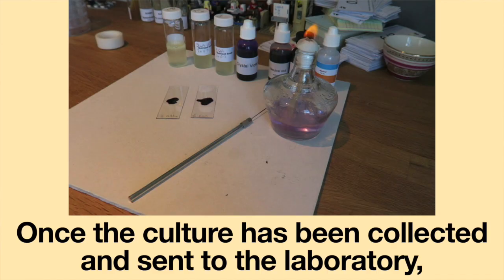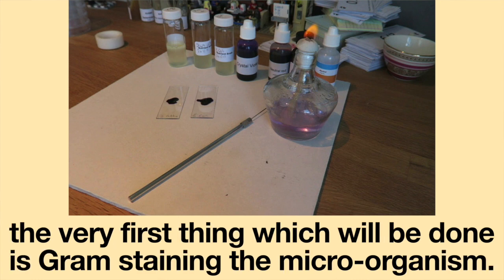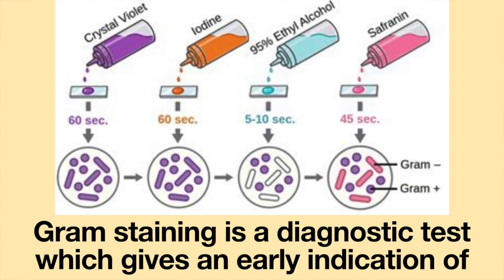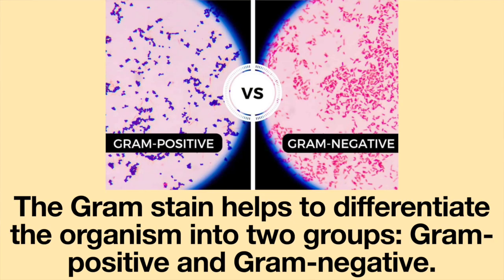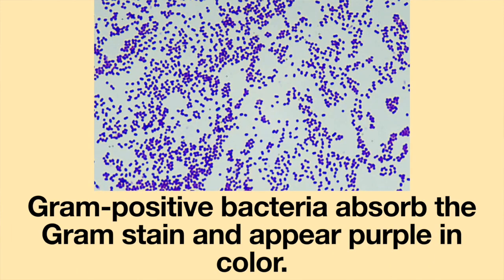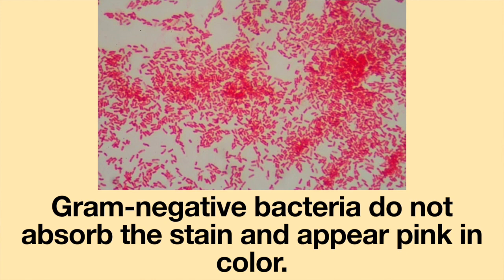Once the culture has been collected and sent to the laboratory, the very first thing which will be done is gram staining the microorganism. Gram staining is a diagnostic test which gives an early indication of potential bacteria through visualization of the bacteria. The gram stain helps to differentiate the organism into two groups: gram positive and gram negative. Gram positive bacteria absorb the gram stain and appear purple in color. Gram negative bacteria do not absorb the stain and appear pink in color.